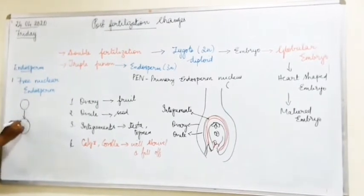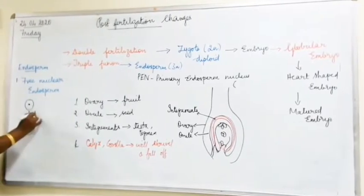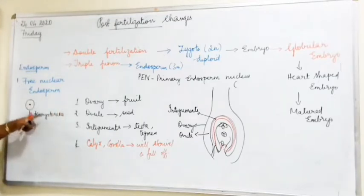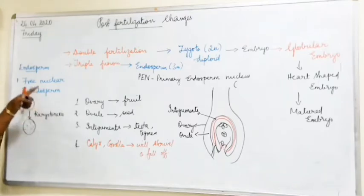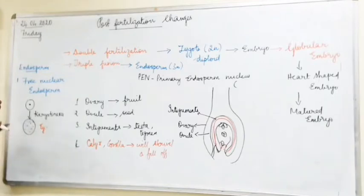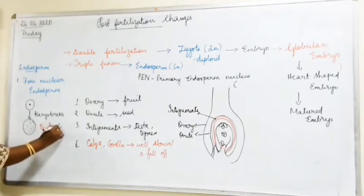During free nuclear endosperm formation, many nuclei are formed but only karyokinesis takes place — nuclear division occurs without cytokinesis. Since cytokinesis does not take place, no cell wall is formed and the nuclei remain free. A very good example is tender coconut water: when you open a tender coconut and drink the water, that nutritive liquid is formed from these free nuclei, because there is no cell wall.